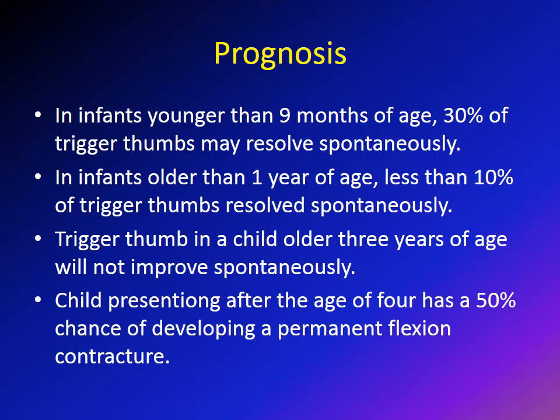Regarding prognosis: in children presenting at the age of nine months, they have about a one-third chance of spontaneous resolution. However, if they present at the age of one year, that 30% chance drops to about 10%. Children presenting with trigger thumb older than three years old will, in the vast majority of cases, not improve spontaneously and these children will need surgery.